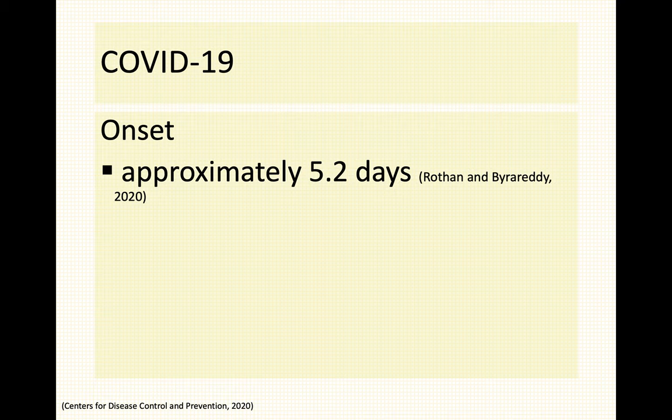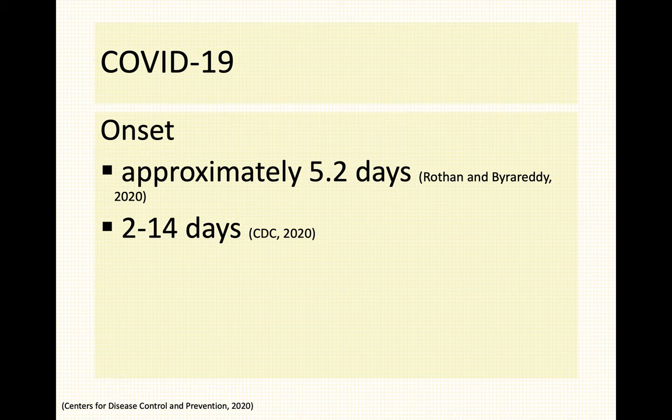COVID-19 is characterized to have an onset of signs and symptoms approximately 5.2 days according to research, and according to the CDC it would appear from 2 to 14 days. That is the reason why individuals — your PUM and PUI specifically — are advised to do self-quarantine or home quarantine for approximately 14 days, as some are actually appearing to be asymptomatic. This is technically the incubation period of the disease.